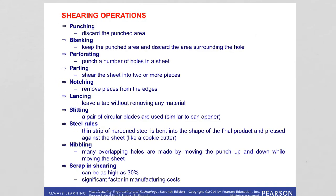Scrap is the material we call trim loss — what we are actually dumping. It can be as high as 30%, meaning 30% of the sheet metal is actually lost after shearing. This is a significant loss in manufacturing because you pay for the whole sheet before forming the blank, but you have to dump the remaining part — that is the scrap.